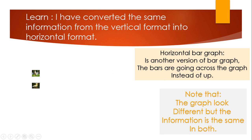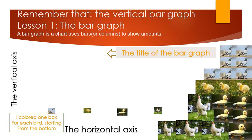The bar is going across, meaning horizontal, instead of going up like a column bar graph. In the column bar graph we start from the bottom and go up. Now in the horizontal bar graph, the bar goes across. This is second grade, first term mathematics.